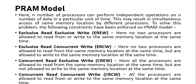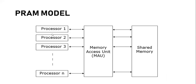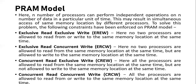N number of processors can perform independent operations on N number of data items in a particular unit of time. Since you have N number of processors, this may result in simultaneous access of the same memory locations by different processors. Looking at this architecture, all N processors are accessing the shared memory at one time, which can cause memory conflicts. For solving this problem, there are some constraints on the PRAM model.